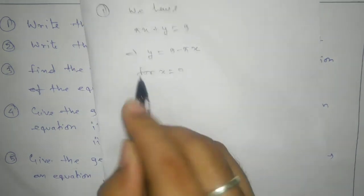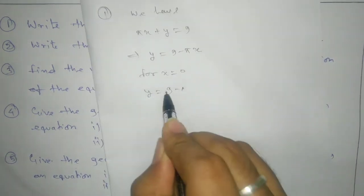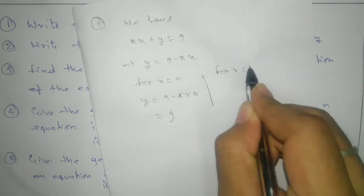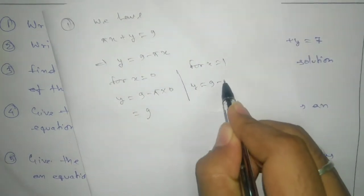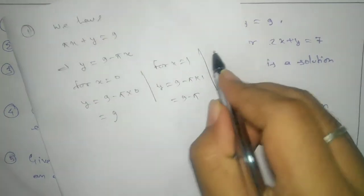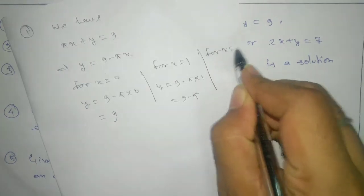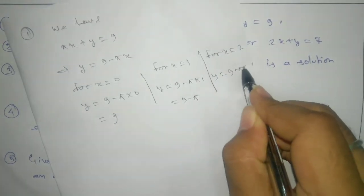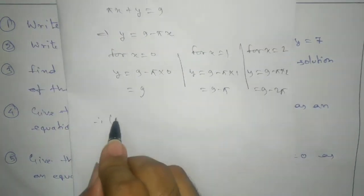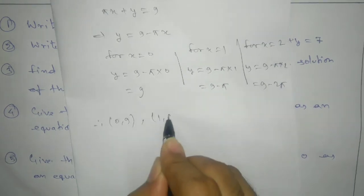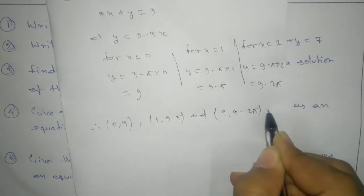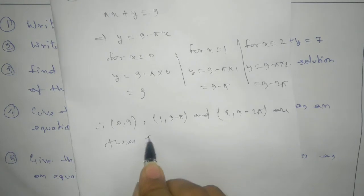We will take x equals to 0. That means y equals to 9 minus π into 0, which gives 9. That's one solution. For x equals to 1, y equals to 9 minus π into 1, that is 9 minus π. This is another solution. And for x equals to 2, y equals to 9 minus π into 2, giving 9 minus 2π. Therefore, our three solutions are (0, 9), (1, 9 minus π), and (2, 9 minus 2π).